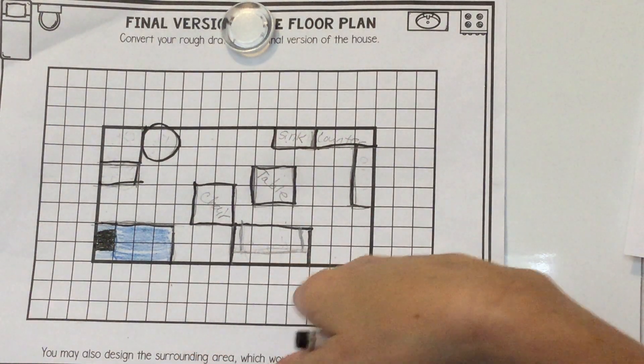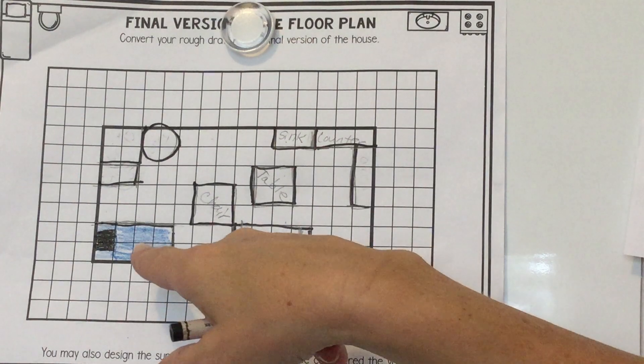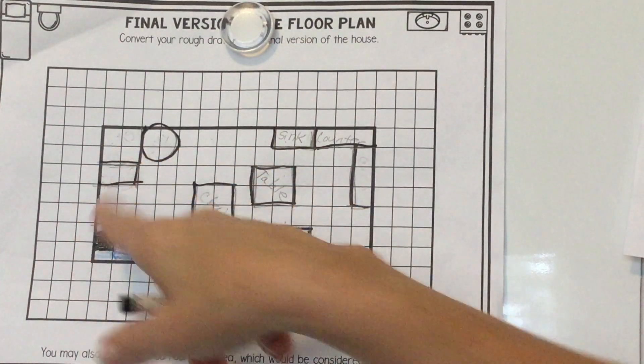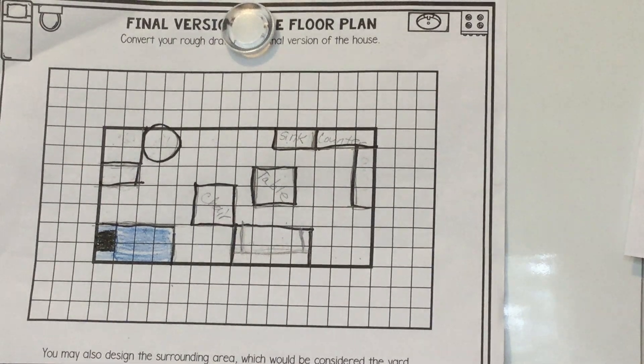So you can see I erased my word that said couch, my word that said bed, toilet, shower, and counter. Here's my bed. I went ahead and made it look like a bed.